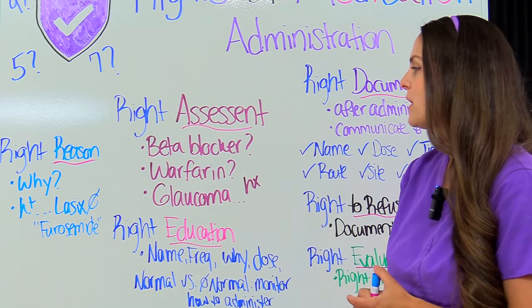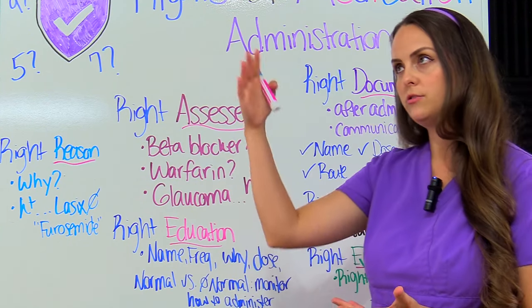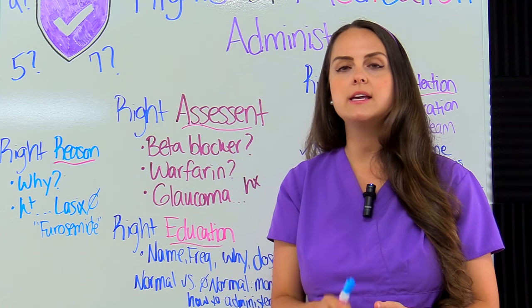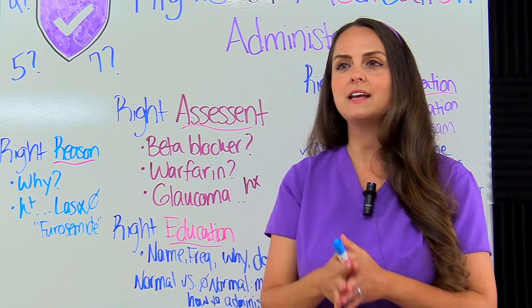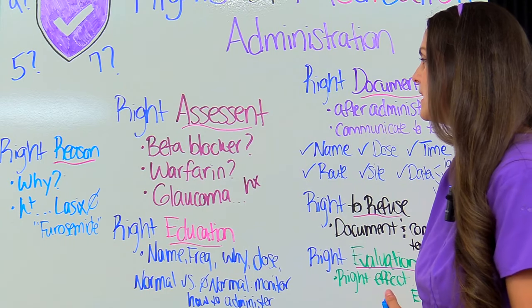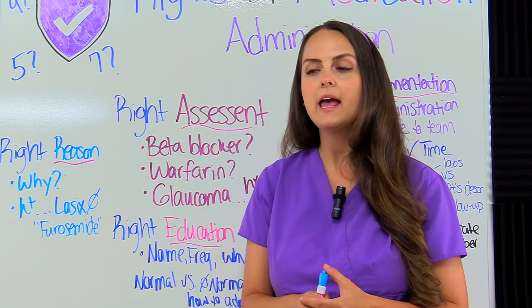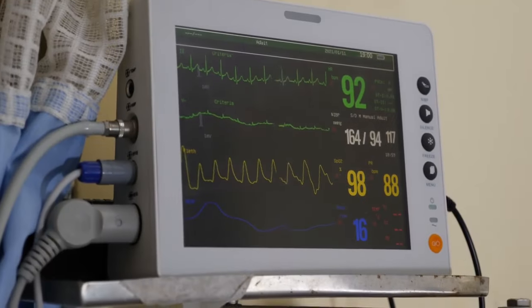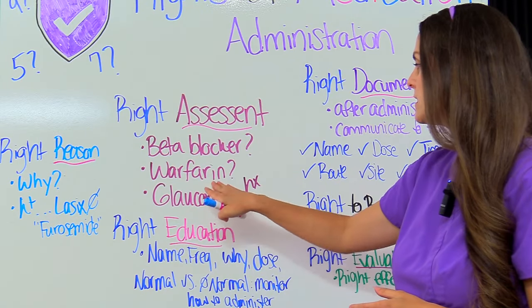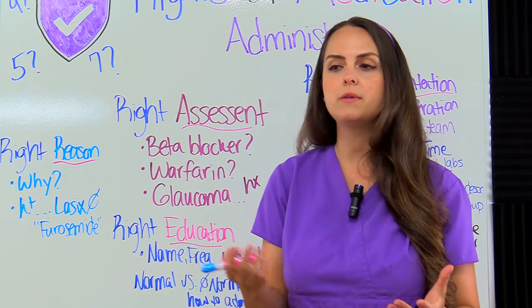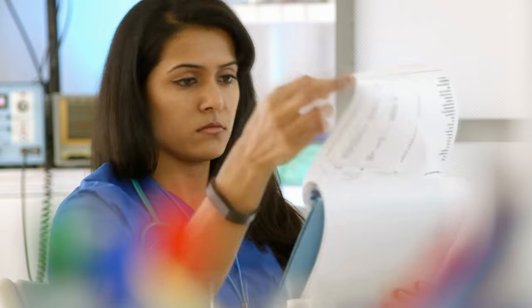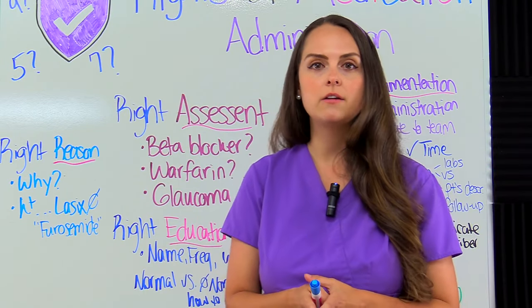Then we have the right assessment. Before giving any medication, ask yourself what information you need to know before administering it. For example, if a patient is taking a beta blocker — which will slow down the heart rate — make sure their heart rate is within normal limits and they're not experiencing severe bradycardia before you give it. Or if a patient is due for Coumadin, an anticoagulant, look at their latest INR result and make sure it's within the parameters the physician wants. If it is, administer; if not, notify the physician.